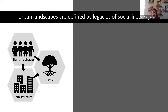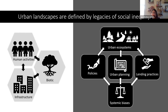Urban ecosystems are influenced by interactions among human activities, infrastructure, and biotic factors that shape biological patterns and processes. But urban ecosystems are also strongly defined by legacies of social inequity. Systemic biases have shaped past policies, planning, and lending practices that strongly influence the distribution of environmental resources in urban landscapes.